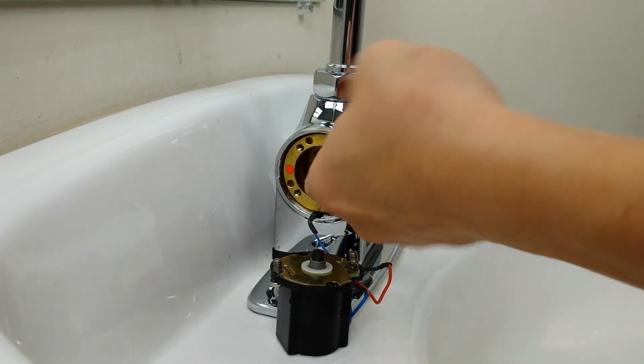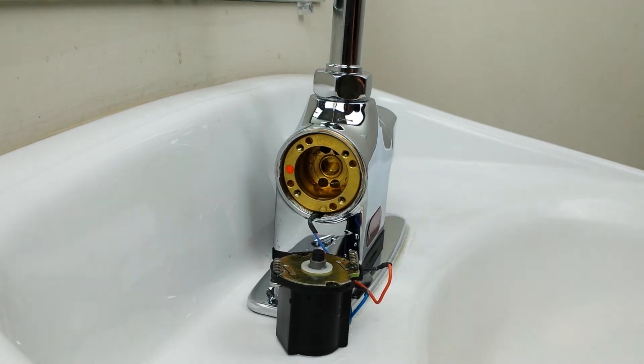Inspect the valve seat for debris by sweeping your finger inside the valve seat. If the valve seat is dirty, use a triple zero grade steel wool pad to clean.